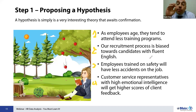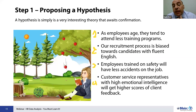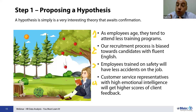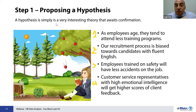Number three: employees trained on safety will have fewer accidents on the job. Number four: a customer service representative with high emotional intelligence will get higher scores from client feedback. Just give me quickly your opinion — which one seems clear to you? Like, it's obvious, I agree, I don't even have to prove it.